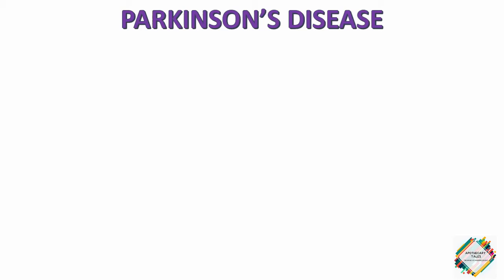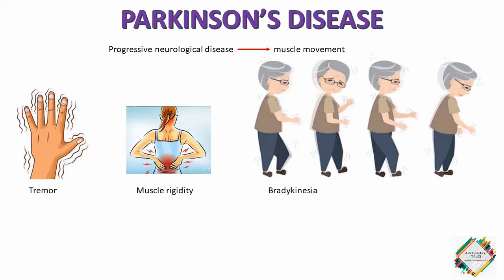Parkinsonism is a progressive neurological disorder of muscle movement that is usually characterized by tremors, muscular rigidity, bradykinesia — that is a slowness in initiating and carrying out voluntary movements — and then we can observe postural and gait abnormalities.